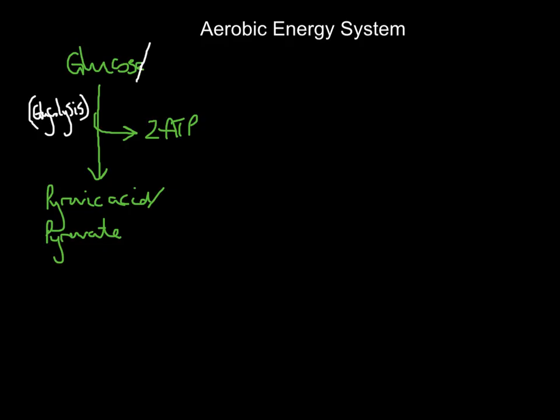However, there's a twist. As well as breaking down glucose, I can also break down fats and proteins. So I can use all three energy sources during the aerobic energy system. The breakdown of glucose is called glycolysis. When you break down fats, it has its own special name: beta oxidation.